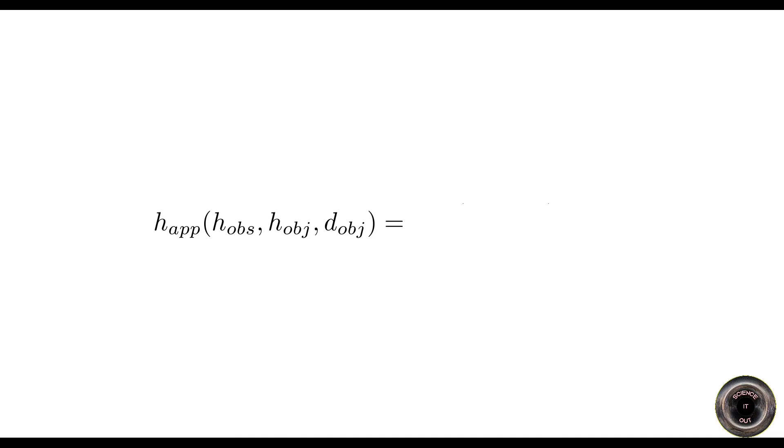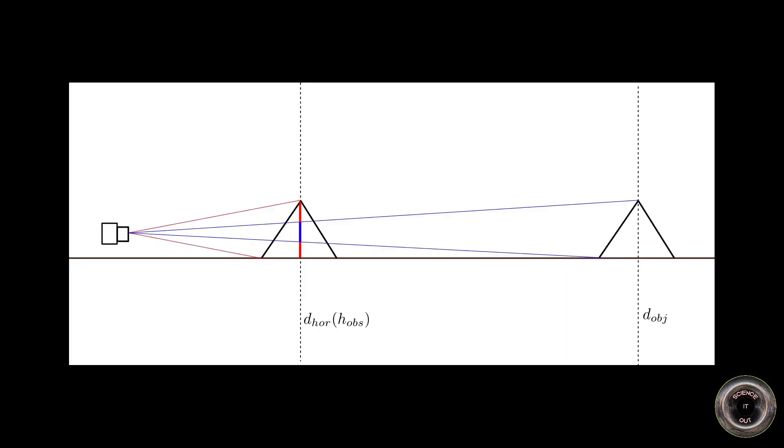Then we divide the actual angular size of the object by it and multiply the result by the object height. Ta-da! That's it. Looks a bit convoluted, but it actually has a simple interpretation. If we draw the same object like, for example, a mountain at two distances, once at the distance to the horizon and the other time at the actual distance,